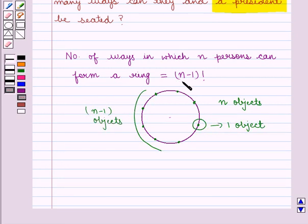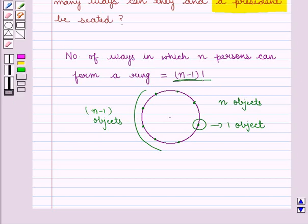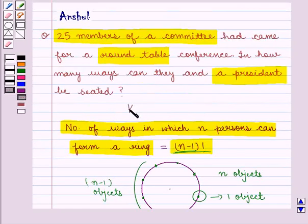In (n-1) factorial number of ways, or we can say the number of ways in which n persons can form a ring is given by (n-1) factorial. This is the key idea we shall be using in this question.